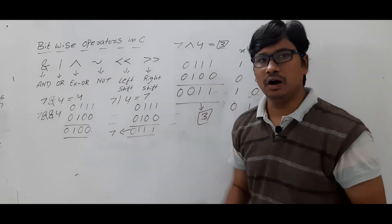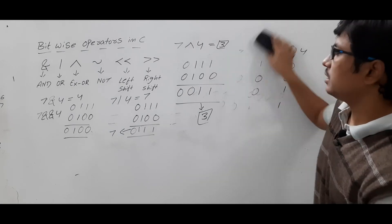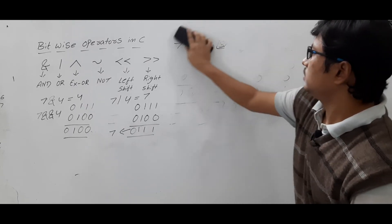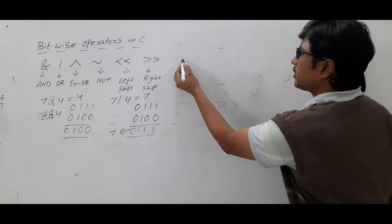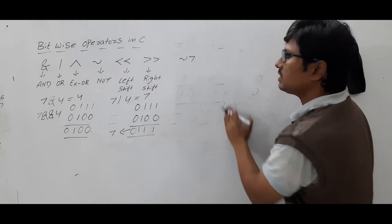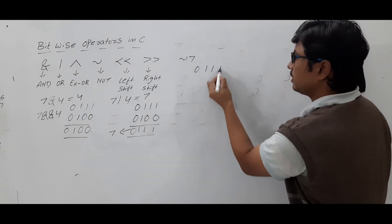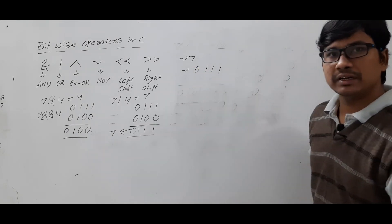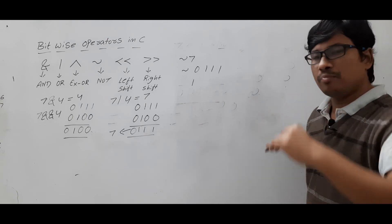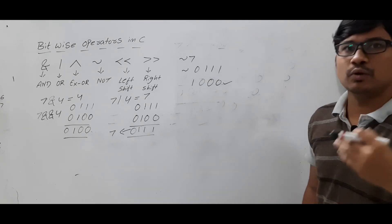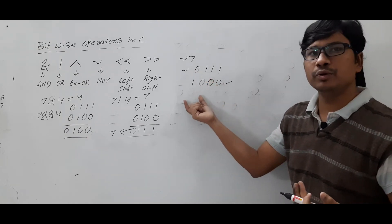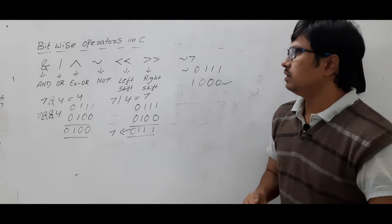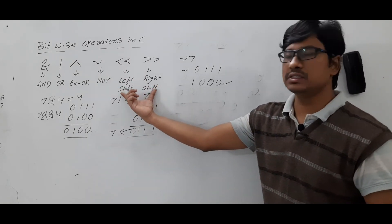Now let me discuss bitwise NOT — this is very simple, it is nothing but a complement. Suppose I want to perform NOT 7. In a four-bit register, 7 is 0111. Performing NOT means computing the ones complement: 0 becomes 1, 1 becomes 0, 1 becomes 0, 1 becomes 0. The result is 1000, which is the ones complement of the given number.